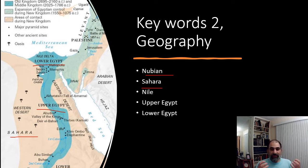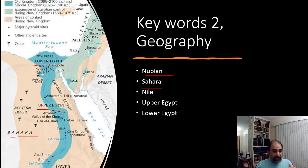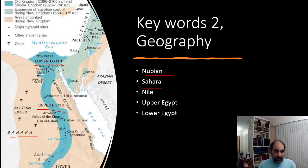We need to understand why the Nile is important. The Nile does the same things for Egypt that the Tigris and Euphrates did for Mesopotamia: it provides water, mud to build with, fish for food, animals to hunt, and serves as a route for transportation and communication.